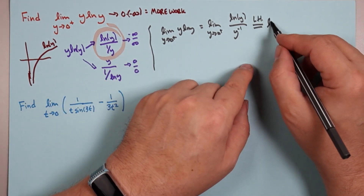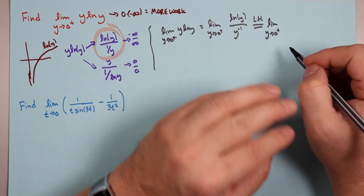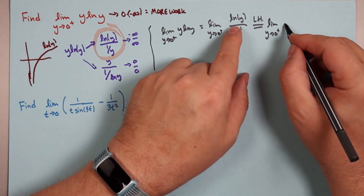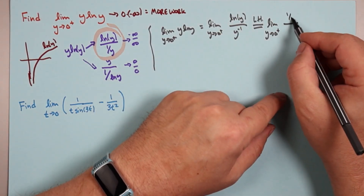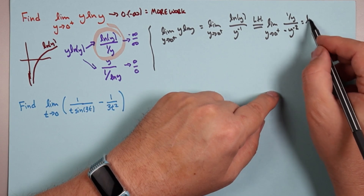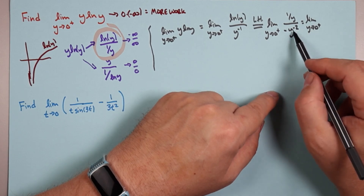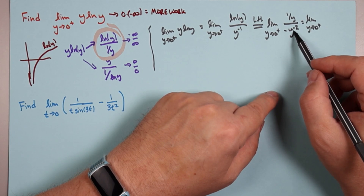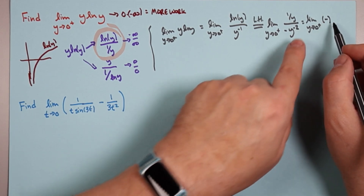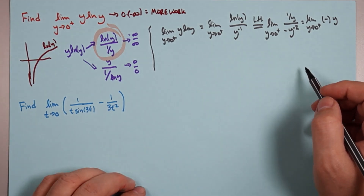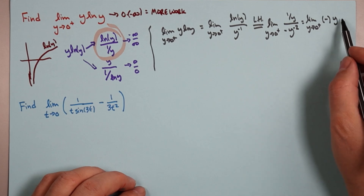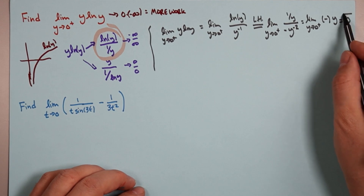Still the same one-sided limit — there's nothing about L'Hôpital that says it has to be two-sided. One-sided limits are fine. Derivative of the top: derivative of log y is 1/y. Downstairs: derivative of y^(−1) is minus y^(−2). Multiply top and bottom by y²: downstairs gives y to the 0 — which is 1 — don't forget the minus sign. Upstairs gives y, so you end up with negative y. As y goes to zero, negative y goes to zero.